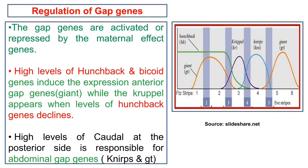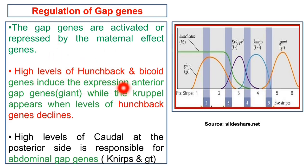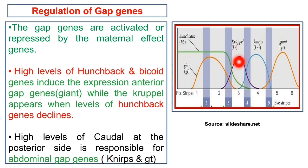The transcription of gap genes in embryonic nuclei is regulated by maternal effect genes. A high level of hunchback induces the expression of the anterior gap gene giant. Krüppel appears when the level of hunchback declines. A high level of caudal at the posterior side is responsible for the abdominal gap genes knirps and giant.